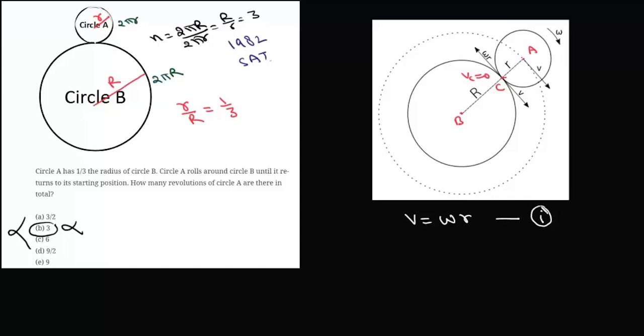First, we will calculate the time taken by center A to complete this whole circle and come back to its original position. What is the distance covered by center A? The distance covered by center A will be nothing but the circumference of this dotted circle, which is 2π(R+r). So that's your distance.